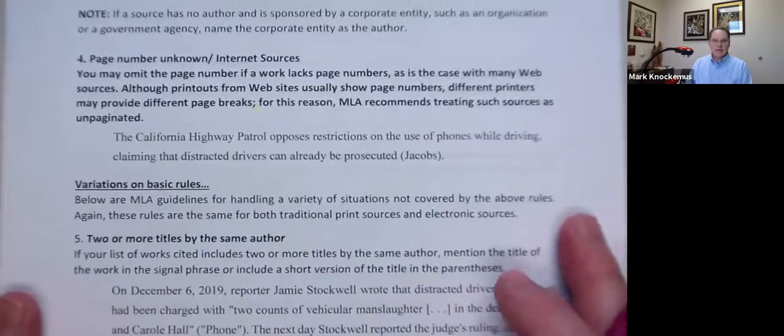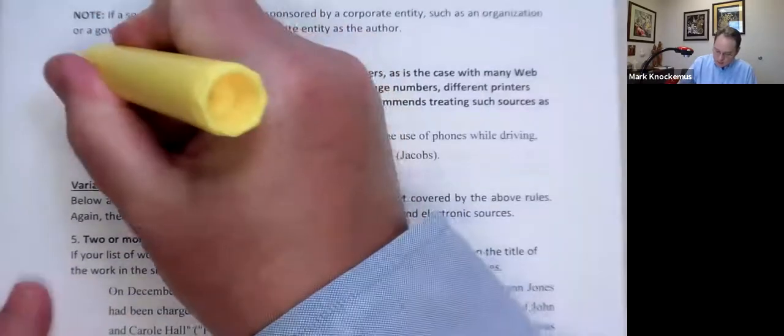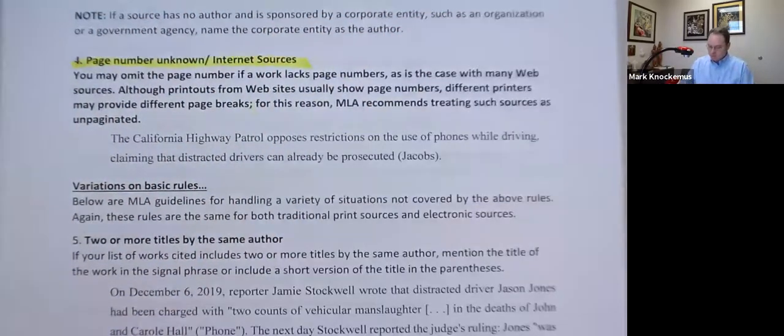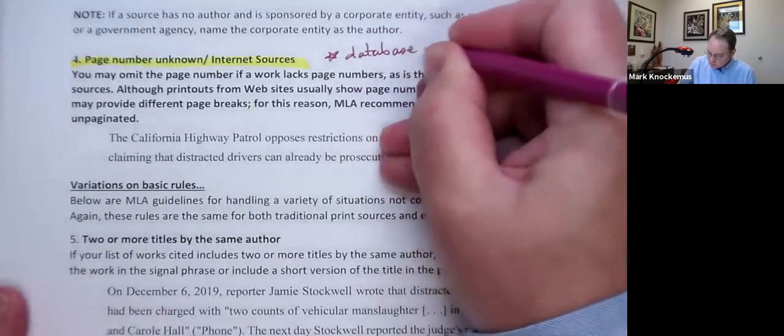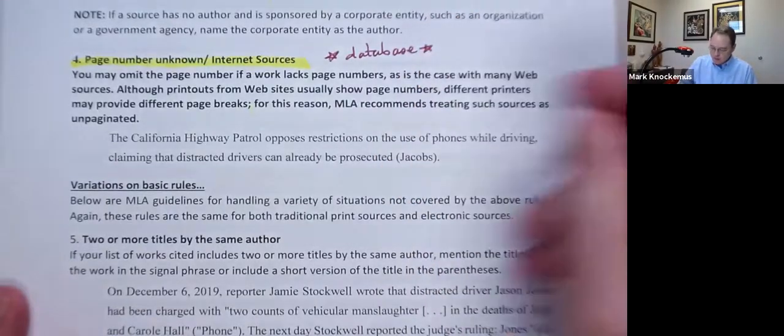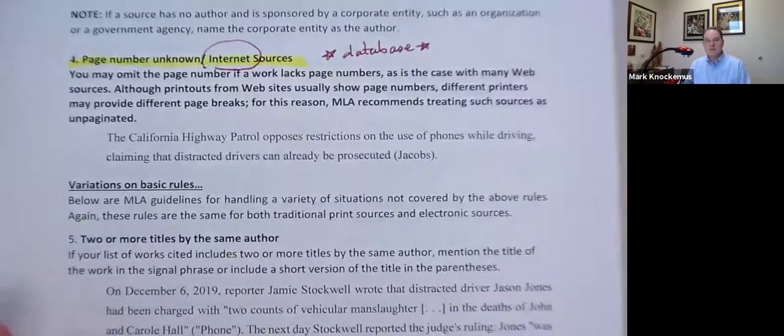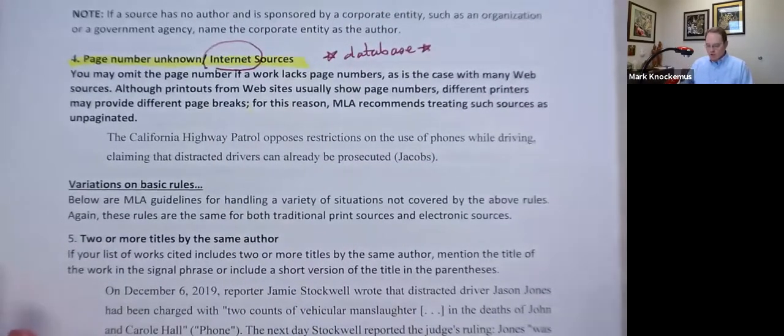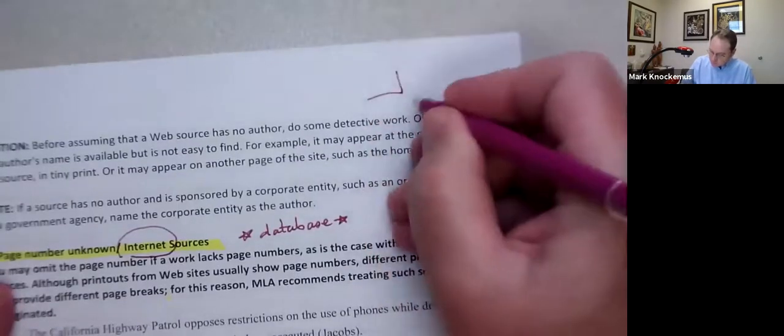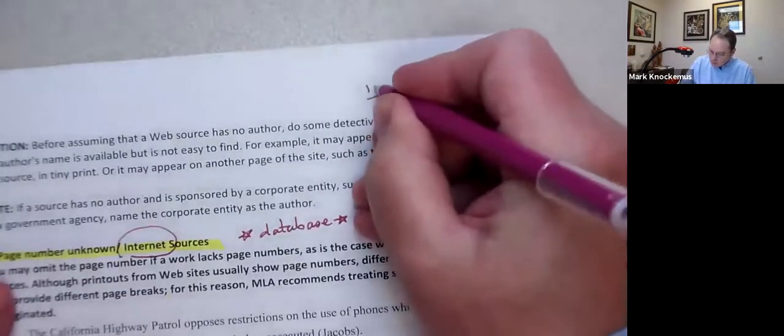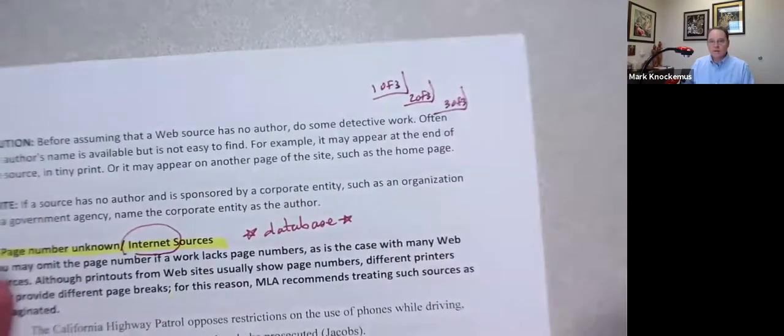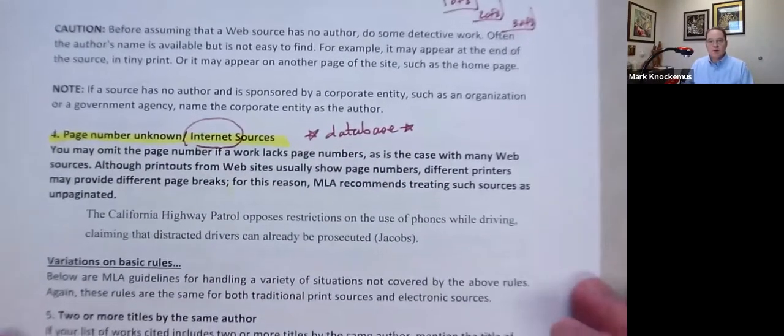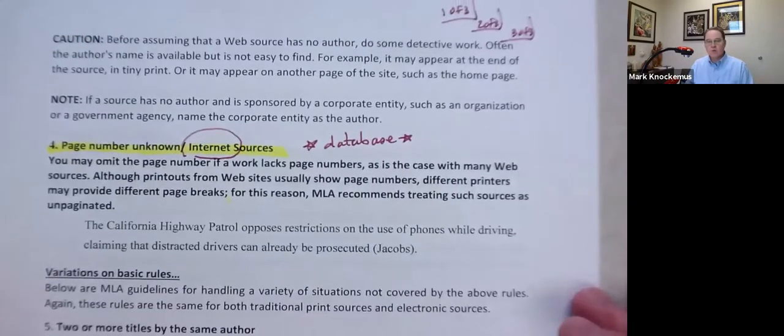Okay. The next one, number four. This is incredibly common. Especially with articles that you get from a database or something that you get from the internet. When you print out articles from the database, what your printer automatically does, it automatically goes through and numbers them, right? But does that mean that that article was published on pages one, two, and three of Newsweek? No.